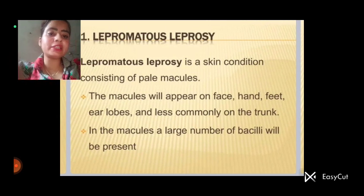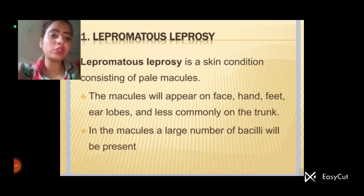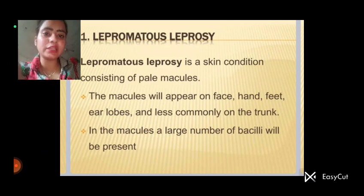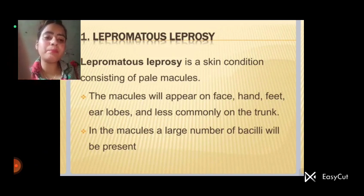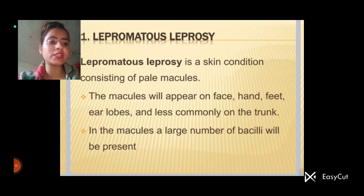First one: lepromatous leprosy. Lepromatous leprosy is a skin condition consisting of pale macules. This skin condition arises and pale macules formation appears on the face, hands, feet, earlobes, and less commonly on the trunk.